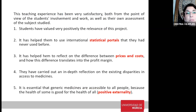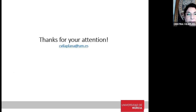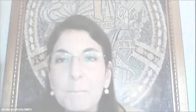Students valued this project very positively. It helped them use international statistical portals, also in English. It helped them reflect on the difference between prices and costs, and carry out in-depth reflection on existing disparities in access to medicines. It is essential that generic medicines are accessible to all people, because this relates to the economic concept of positive externality: if you are healthy, it's more probable that people around you will also be healthy. So health of some is good for the health of all. Thank you for your attention.